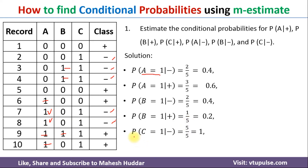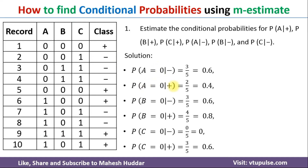Similarly, you can calculate probability of C equals one given negative, C equals one given positive. The other possibilities are probability of A equals zero given negative, zero given positive, and so on. I have already calculated these — just go through this particular calculation and you will understand how to calculate these conditional probabilities.